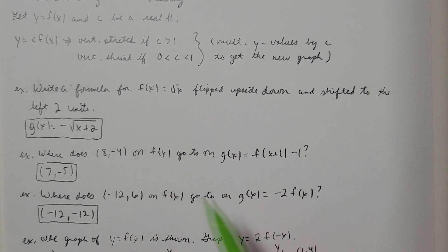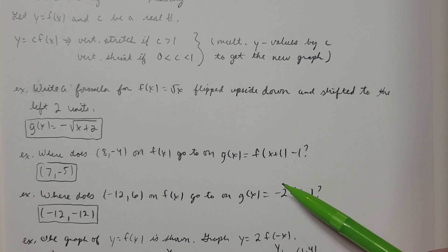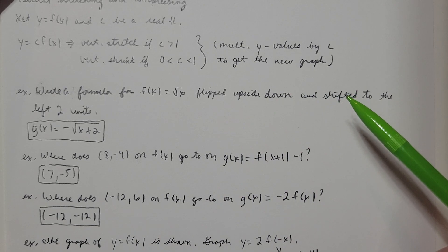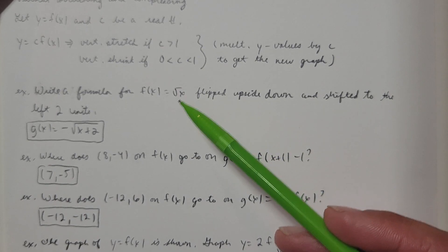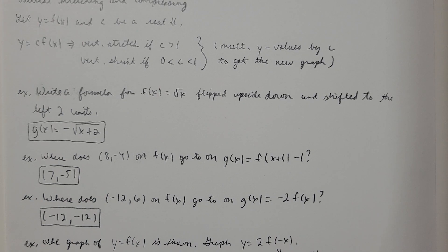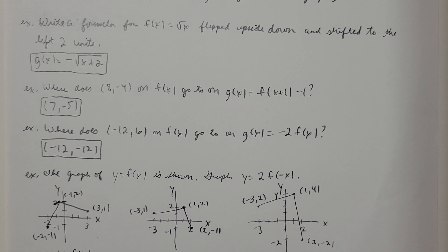Let's take a look at this example: we want to write a formula for f(x) = √x flipped upside down and shifted to the left two units. I'll call the new function g(x). If I'm flipping it upside down, I need to throw a negative in front of the function. And if I'm going to the left two units, I replace x with x+2. So the answer is g(x) = -√(x+2).